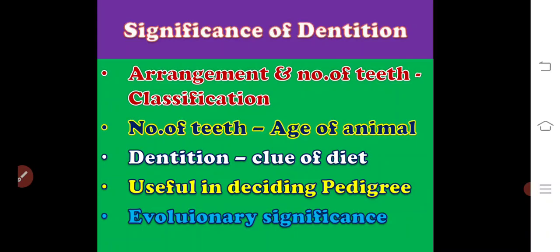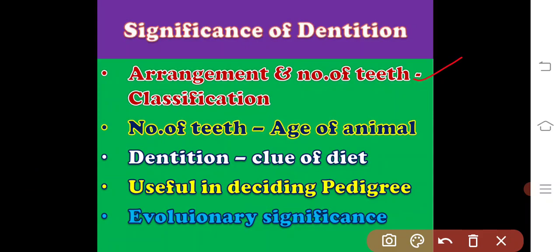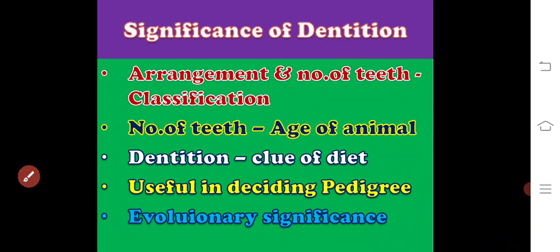The significance of dentition: the arrangement and number of teeth is useful for classification of mammals; the number of teeth gives an idea of the approximate age of the animal (for example, humans who have not attained 18 years of age do not possess wisdom teeth — the last molar); dentition gives a clue about the diet of the animal; dentition is useful in deciding the pedigree or ancestry of certain animals; and it also has evolutionary significance.